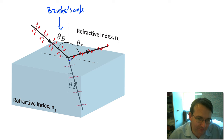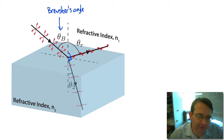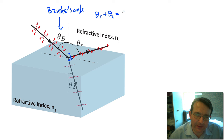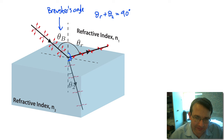At Brewster's angle, the reflected ray is at 90 degrees to the refracted ray. Going around the straight line, which is 180 degrees, we can say that the angle of reflection plus the angle of refraction must equal 90 degrees, because 180 minus 90 leaves 90 degrees.